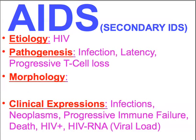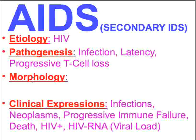AIDS is a real bona fide disease. Its etiology is a virus which we call HIV. Its pathogenesis is the process by which infected cells undergo certain changes and periods of latency, but ultimately result in progressive T-cell loss, as well as many other cells besides lymphocytes being infected. It has a wide variety of morphologies, most of which are the result of secondary opportunistic infections. Clinical expressions include a wide variety of opportunistic infections, neoplasms, progressive immune failure, death, and expression of viral RNA in the blood called the viral load.